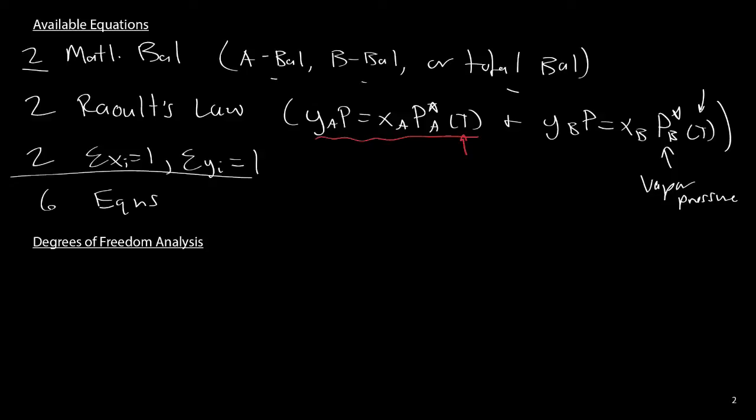Going back to our degrees of freedom analysis: we have six total unknowns and six available equations, so we have zero degrees of freedom. That means not only does a solution exist, but a unique solution exists.